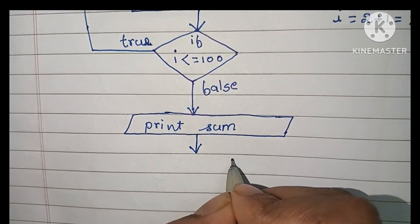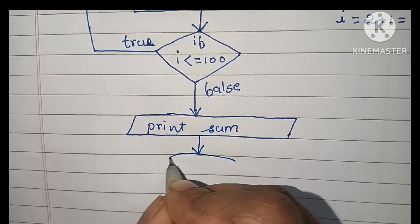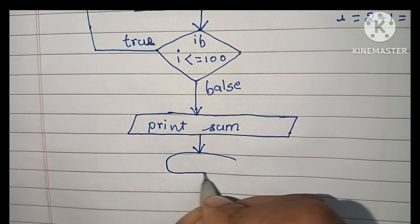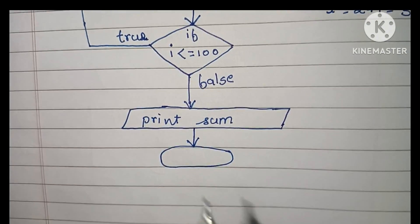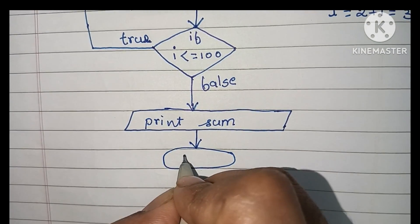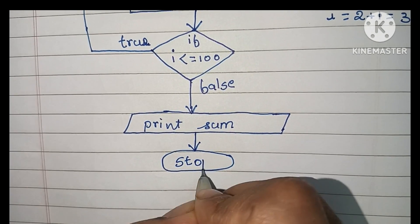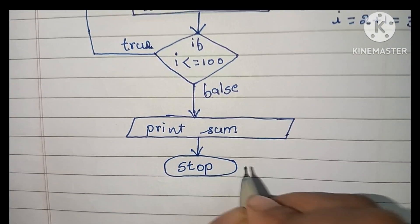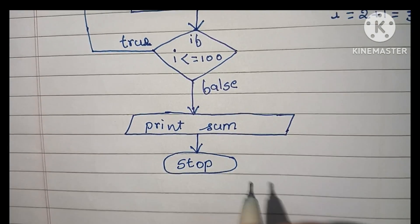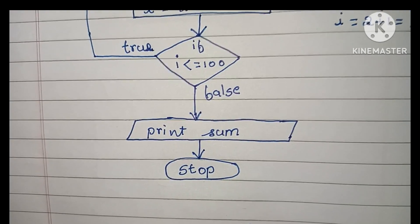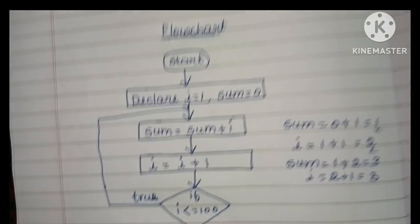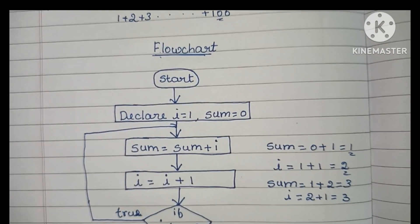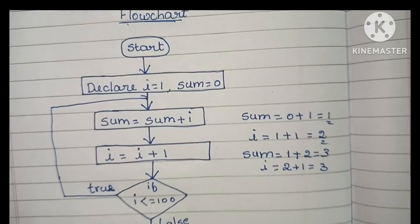Next we stop the flowchart using a STOP statement. The STOP statement is written within an oval shape.